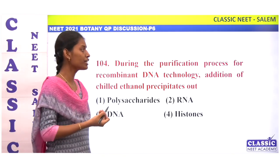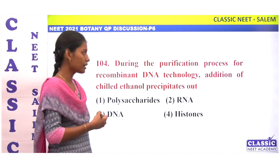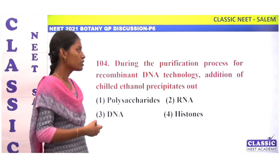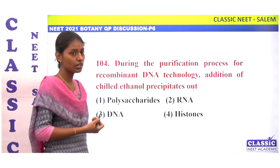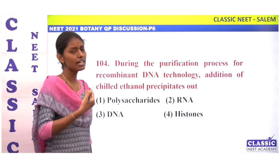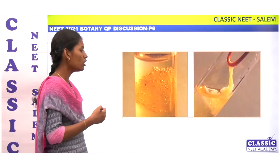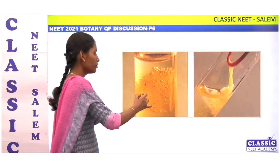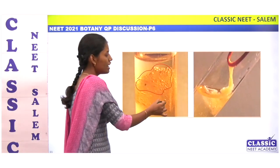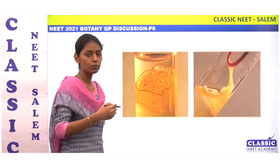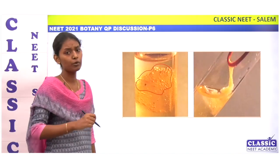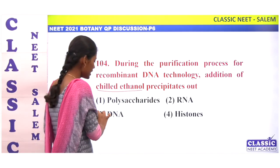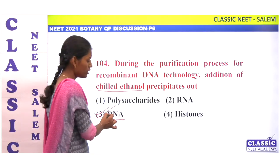During the purification process for recombinant DNA technology, addition of chilled ethanol precipitates out what? DNA is precipitated out after adding chilled ethanol. We can see the diagram of precipitating DNA — it is removed using a spooling technique. So addition of chilled ethanol causes the DNA to be precipitated out. Option 3.